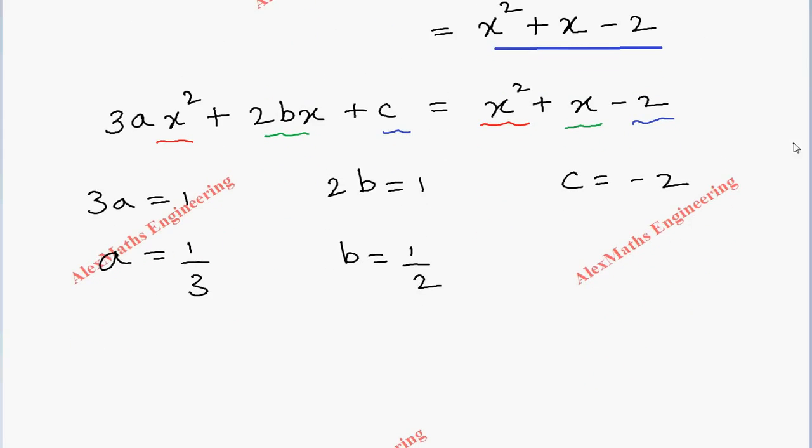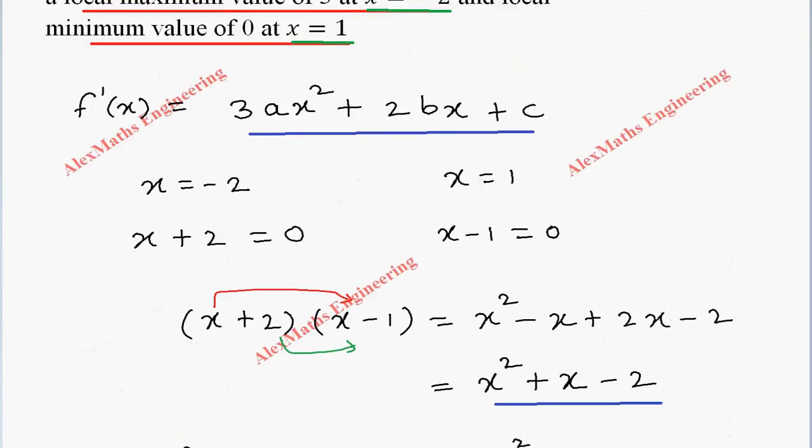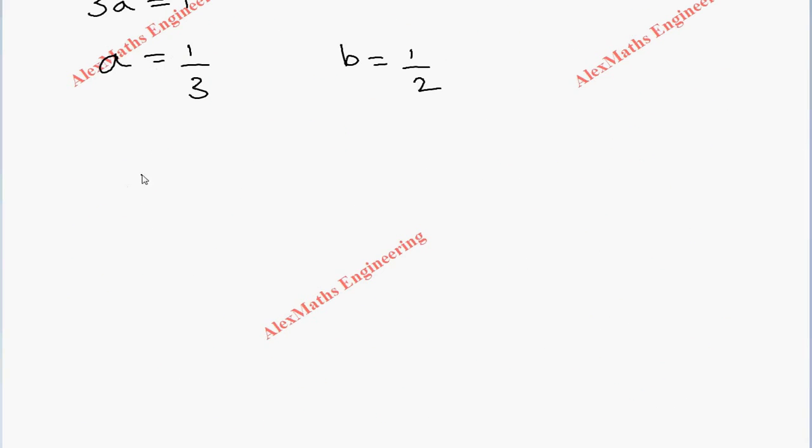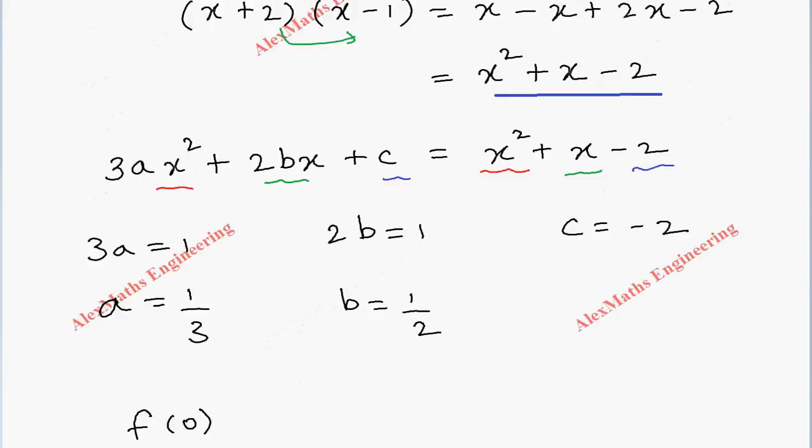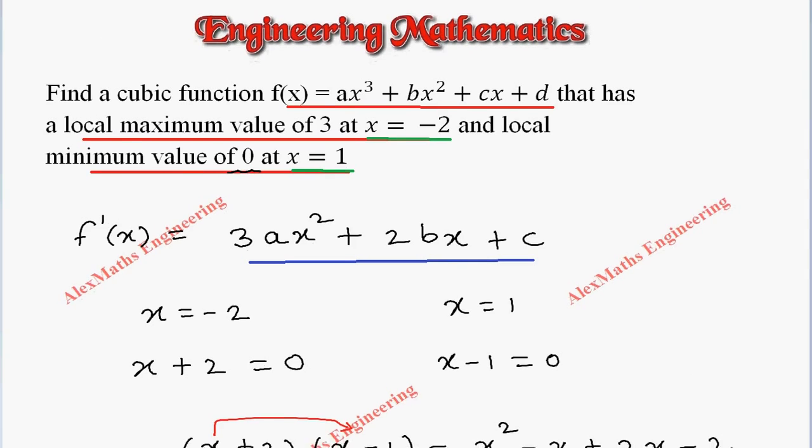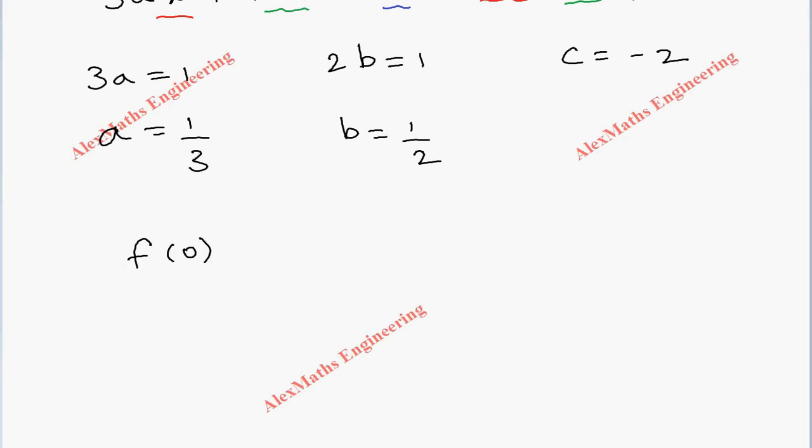So we got a, b and c values. Now let's use the other condition. Local maximum of 3 at x equal to minus 2 is one condition. Local minimum of 0 at x equals 1. So let's take f(1) and the value is 0. We have to take f(1) because at 1 it attains the value 0.